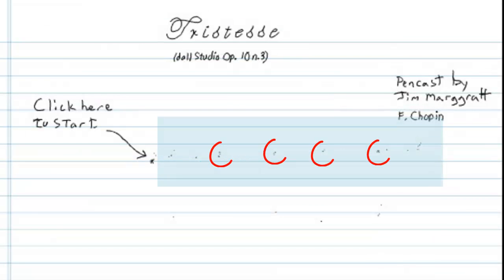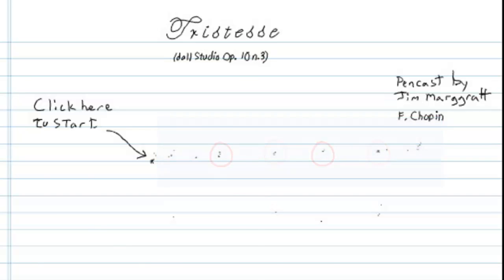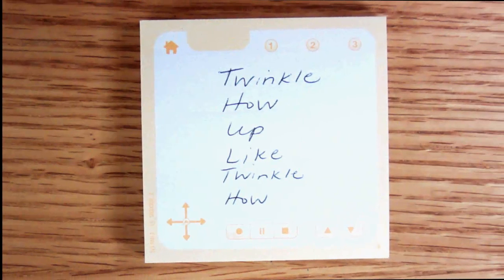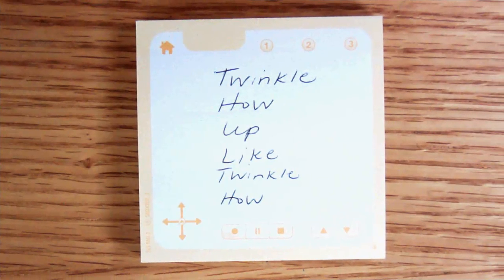As a result of this technique, you will often see small dots of ink on the page where you tapped repeatedly. To avoid this in your final pencast, you can use a Livescribe sticky note to make your marks for playback.